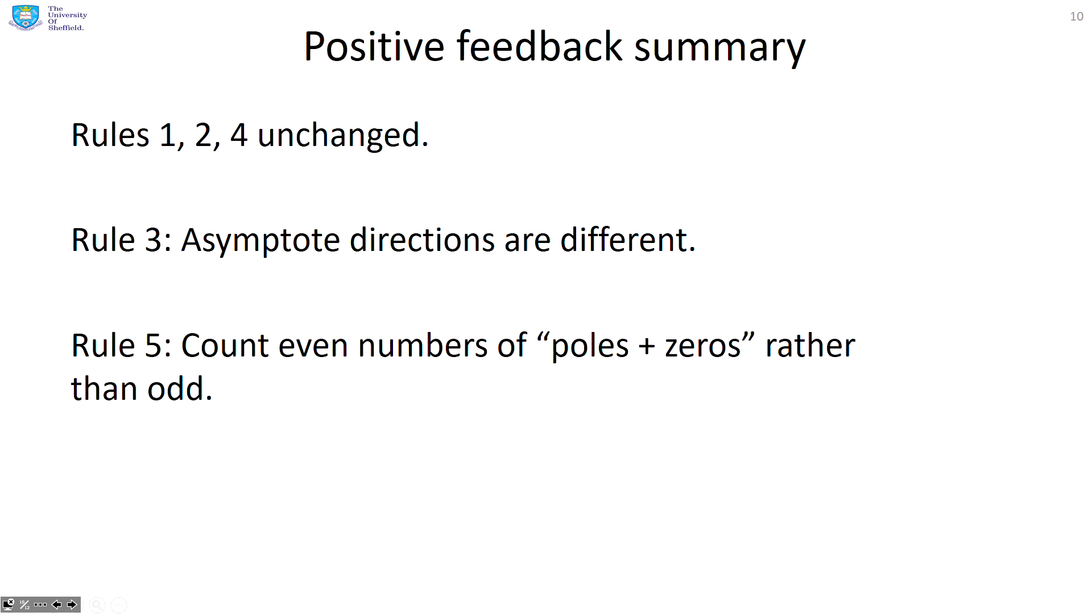So here's a summary of root loci rules using positive feedback. Rules one, two and four are unchanged. Exactly the same. Nothing new to learn. Rule three, the asymptote directions are different. So you need to be clear on that.